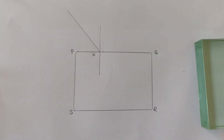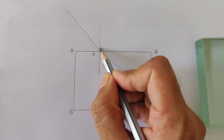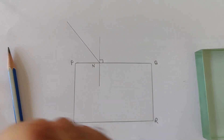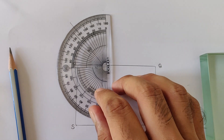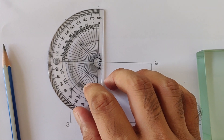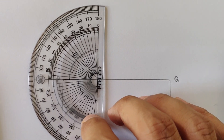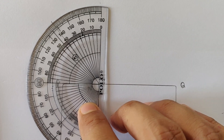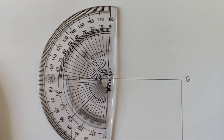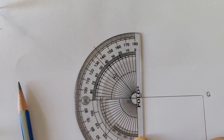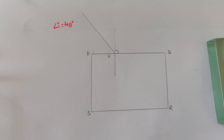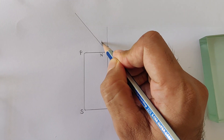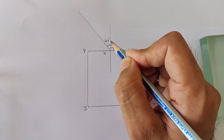This normal is at 90 degrees to the surface. Now we can measure the angle of incidence by keeping the protractor on the normal line. As you can see, I'm placing the protractor on the normal line — this is perfect. Our angle of incidence is exactly 40 degrees, as you can see here. I'll mark this angle as 40 degrees.